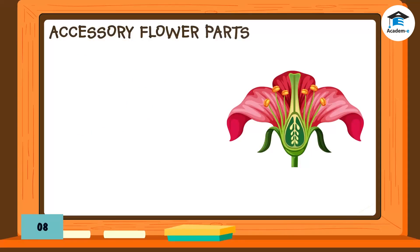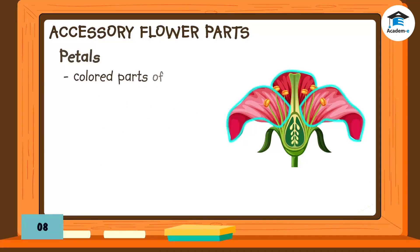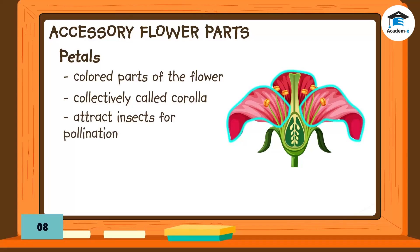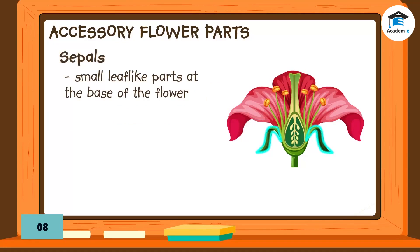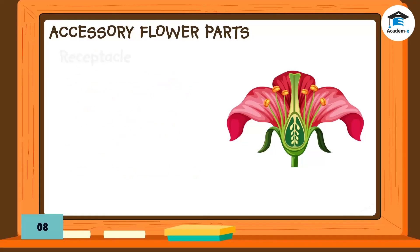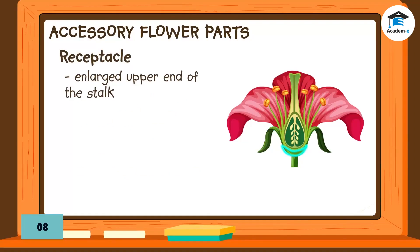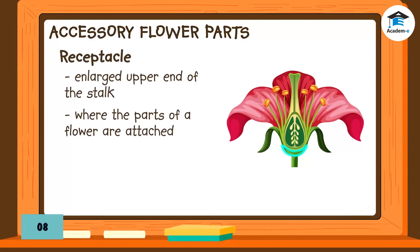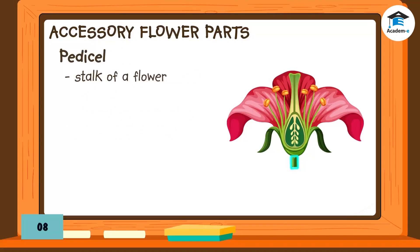The accessory flower parts include: Petals, the colored parts of the flower collectively called corolla — they attract insects for pollination. Sepals are small leaf-like parts at the base of the flower that initially protect the flower when it is still a bud; a group of sepals is called calyx. The receptacle is the enlarged upper end of the stalk where the parts of a flower are attached. The peduncle is the stalk of a flower.